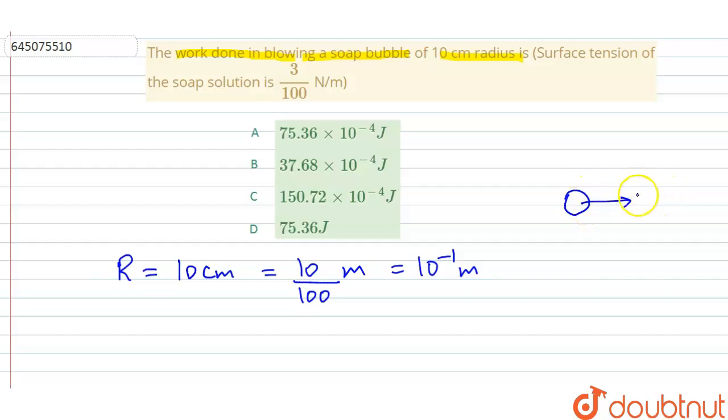it will be blown up into the soap bubble having radius 10 centimeters. Okay, so you have to calculate what is the work done in this process. And also, the surface tension value is given, that is 3 by 100 Newton per meter.